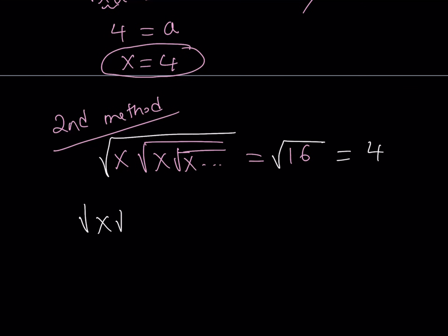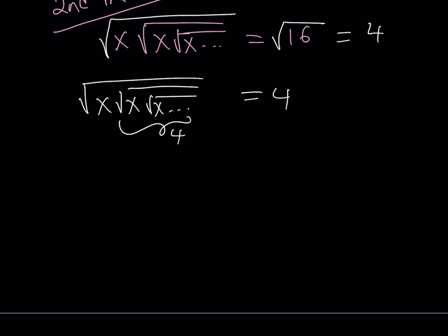Now, since this expression right here, the square root of x times the square root of x times the square root of x dot dot dot, is equal to 4. That implies that this part here is also 4. And that implies that the square root of 4x is equal to 4. And that means 4x is equal to 16 if you square both sides. And that means x equals 4.